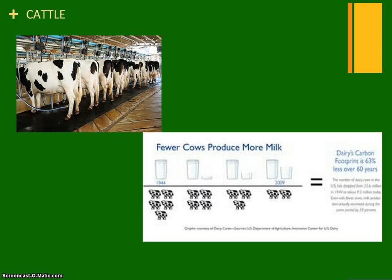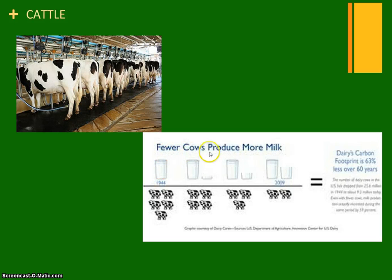Our third example is cattle. This is a milking plant where all the cows are being milked. This chart shows fewer cows producing more milk. They've bred cows so that in 1944 it would take five cows to produce a certain amount of milk.